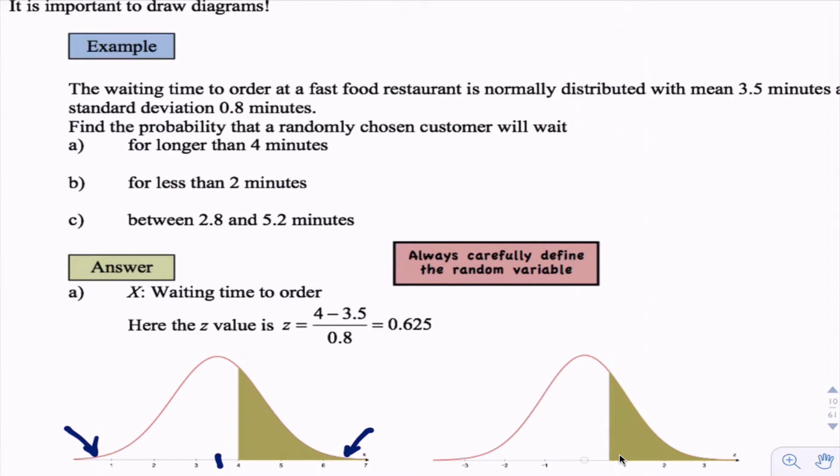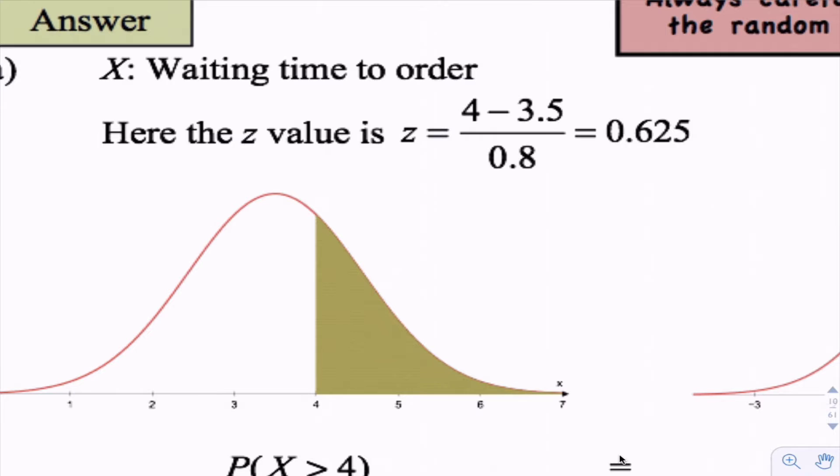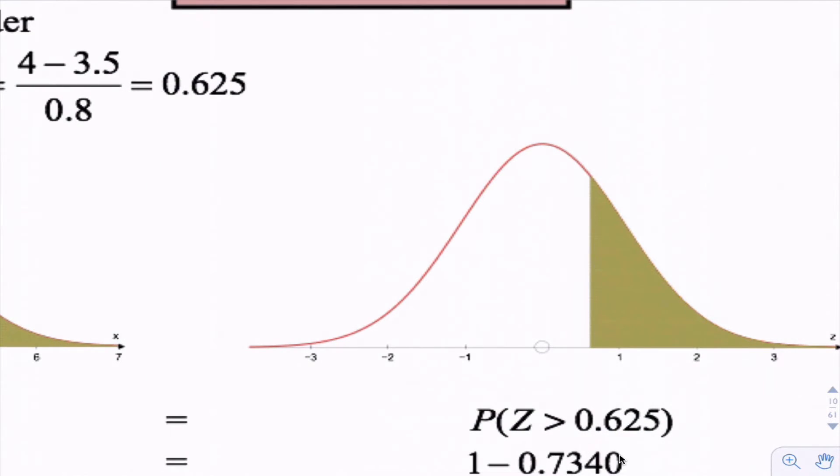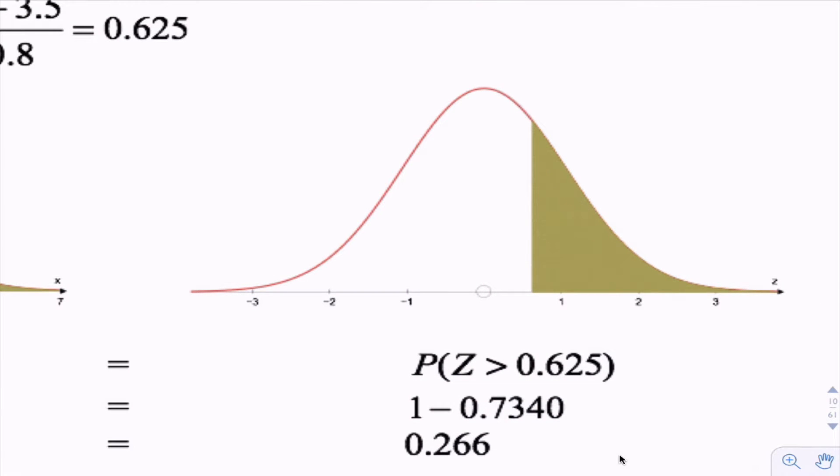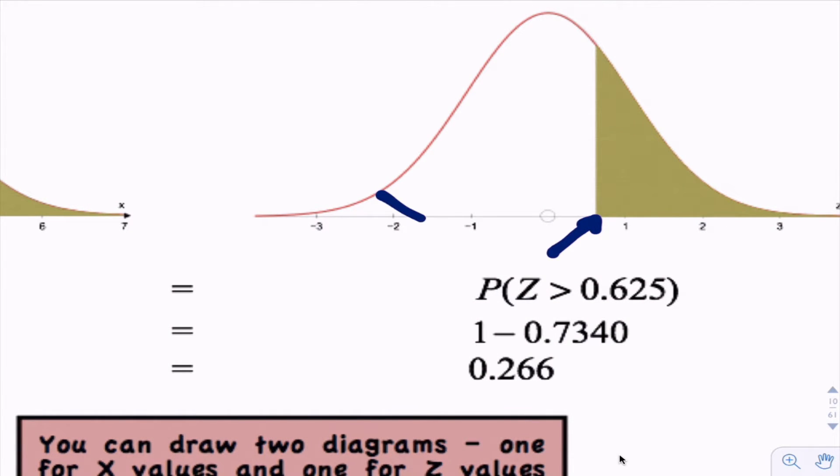The first question says find the probability that a randomly chosen customer will wait for longer than four minutes. You can see on this graph, longer than four minutes is that area underneath the curve. Now how many standard deviations above the mean does a score of 4 represent? The calculation shows it's 0.625 standard deviations above the mean. In the old days we'd go to our tables, look up 0.625 in the table. The tables always give the score from that value down. Subtract that from one gives you the area or probability that we're looking for.